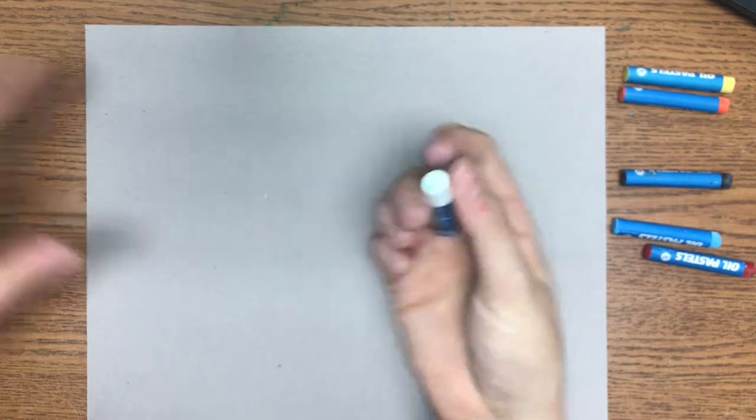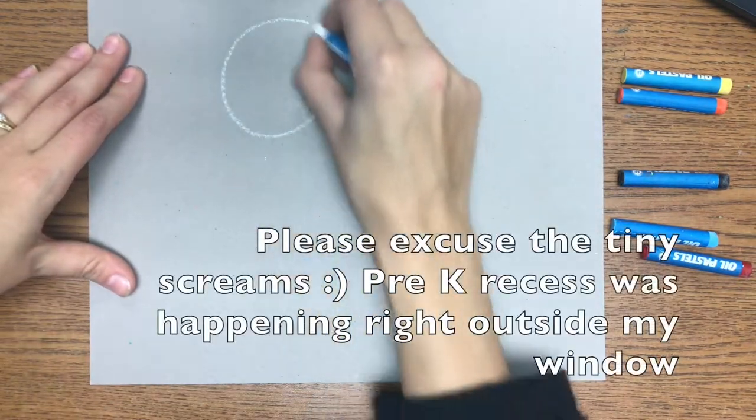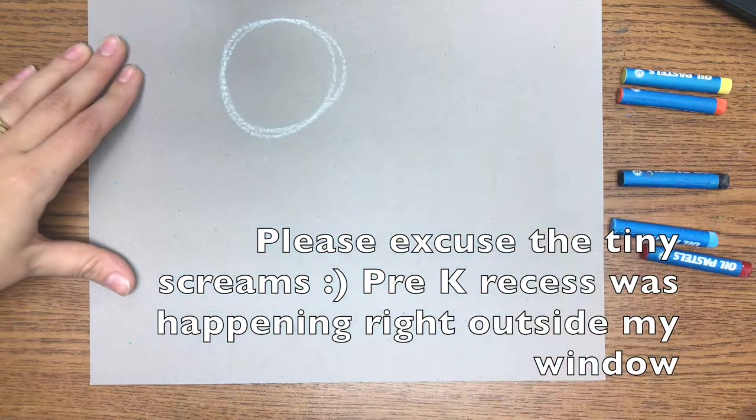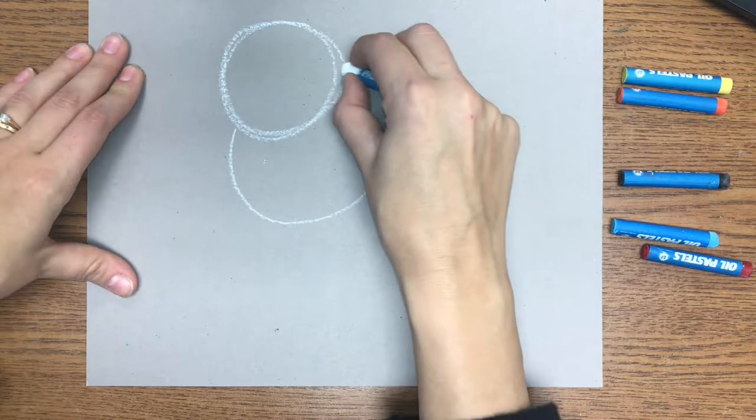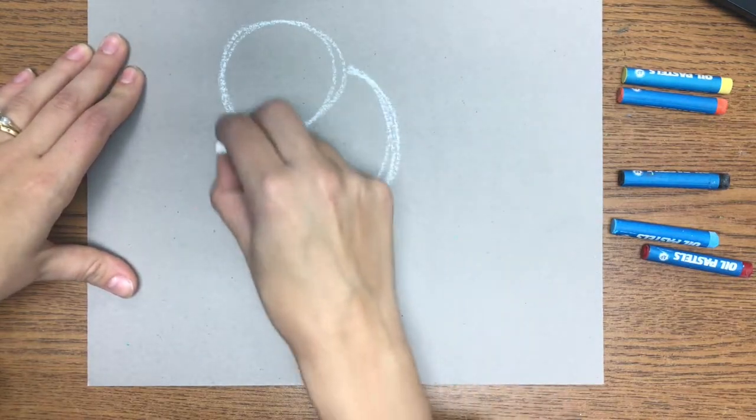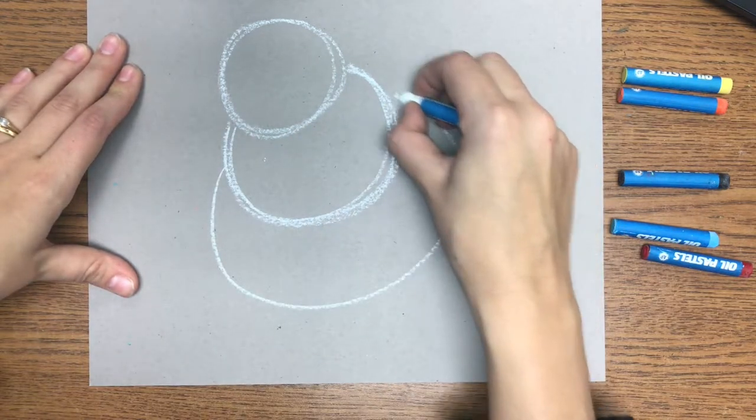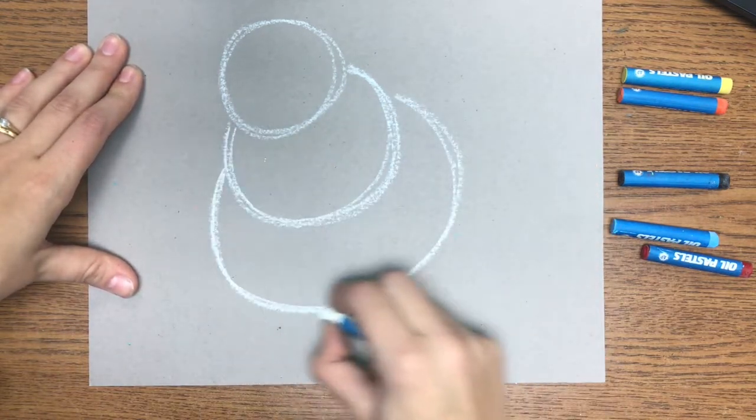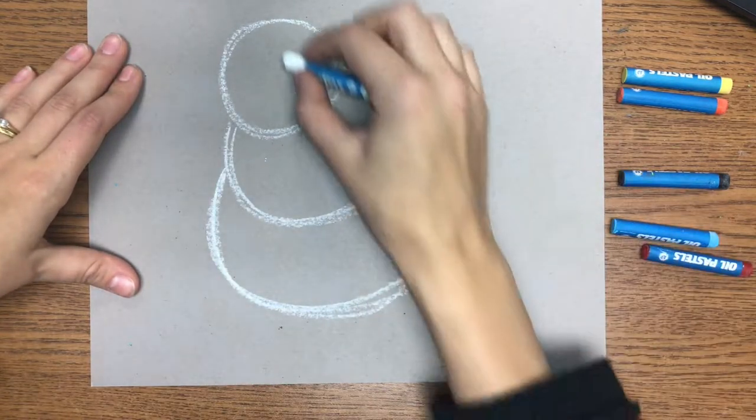So to make your snowman look three-dimensional we need to draw it from a bird's-eye perspective. Perspective is the way or the viewpoint that you look at something. So to do so you need to start out with one circle for the first snowball. The next circle is not going to be finished. It's kind of a C shape that attaches on either side of the first one and then the third snowball is the exact same thing as the second one you drew. It does not have to be perfect.